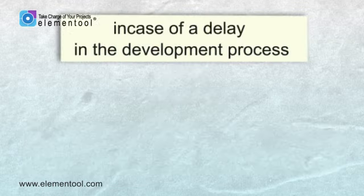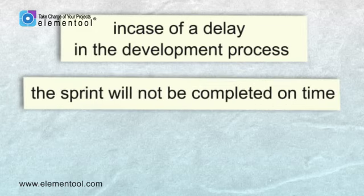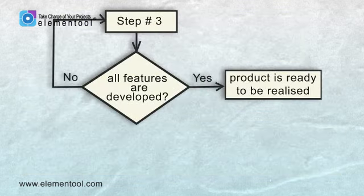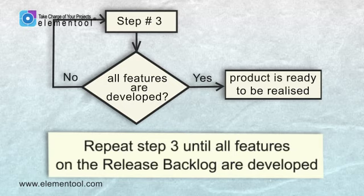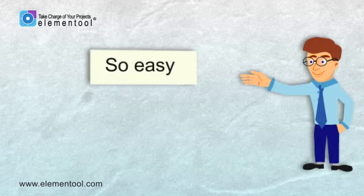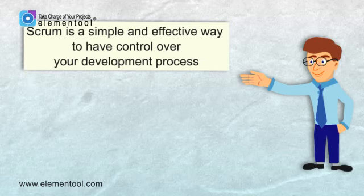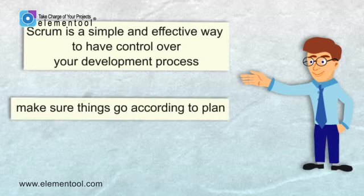Also, in case of a delay in the development process, the sprint will not be completed on time and that will indicate to everyone that there is a problem and something needs to be done. Repeat Step 3 until all features on the release backlog are developed and the product is ready to be released. That's it! Scrum is a simple and effective way to have control over your development process and make sure things go according to plan.